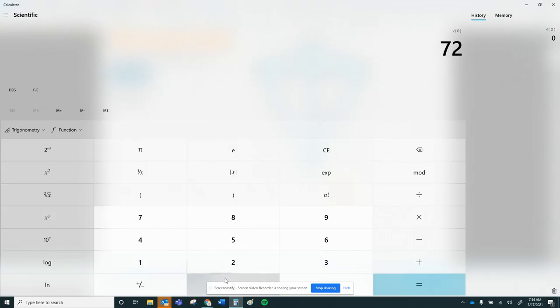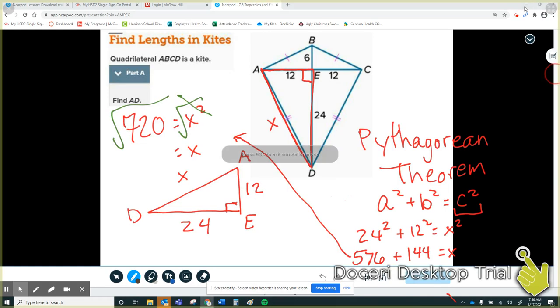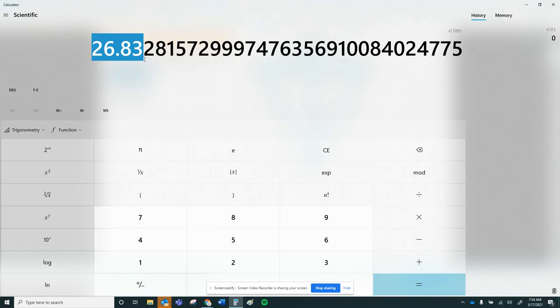I want the square root of 720. Hit 720 and then hit the square root button. There we are. So it looks like it's about 26.83. Did I round that right? 26.832, so yes, it says 26.83. Okay.